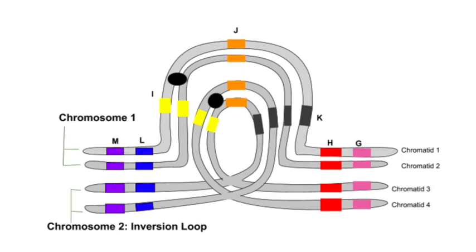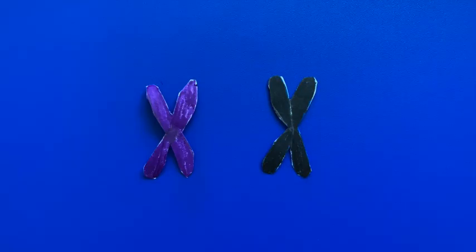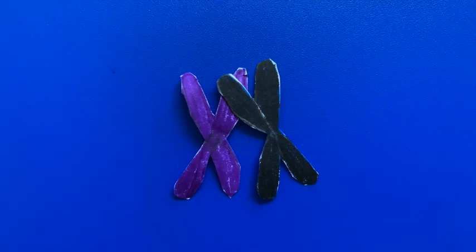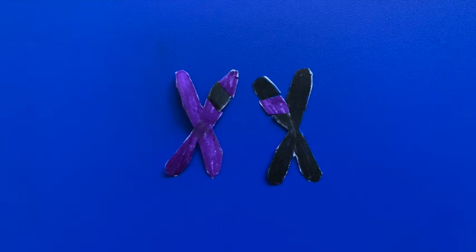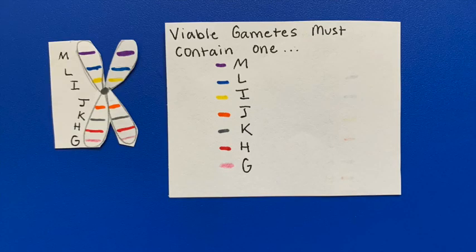Remember, in meiosis 1, sister chromatids have not yet separated, so we have two chromatids per each chromosome coming into play. Crossing over occurs when homologous chromosomes pair up with each other and exchange genetic material. Duplications and deletions result when crossing over occurs in inversion loops. When our gametes do not contain all the gene categories from the original chromosome, we say that they are no longer viable.